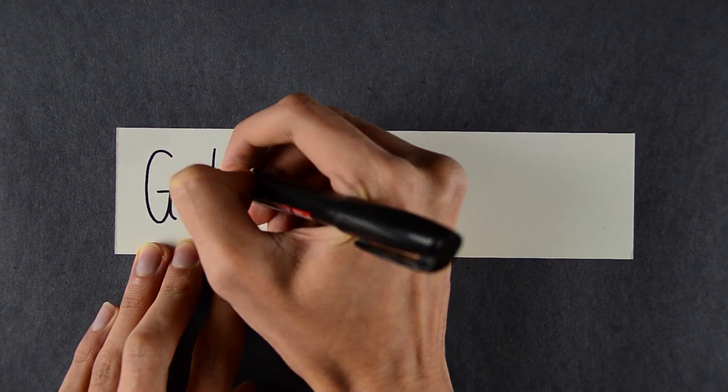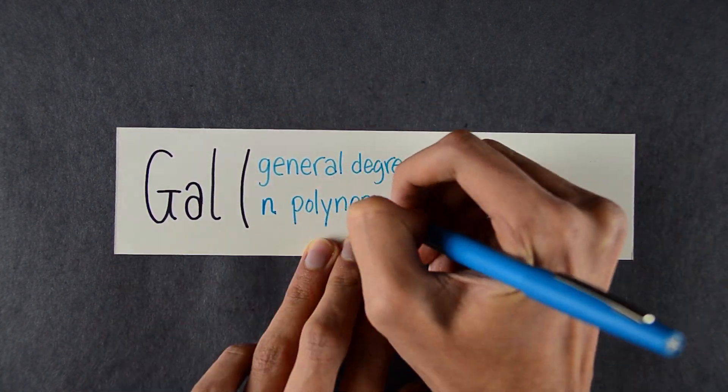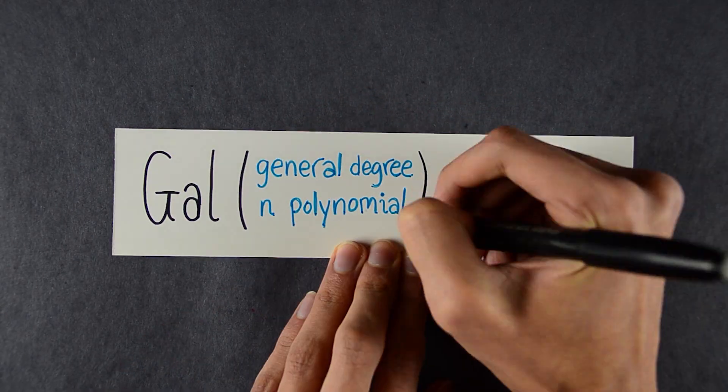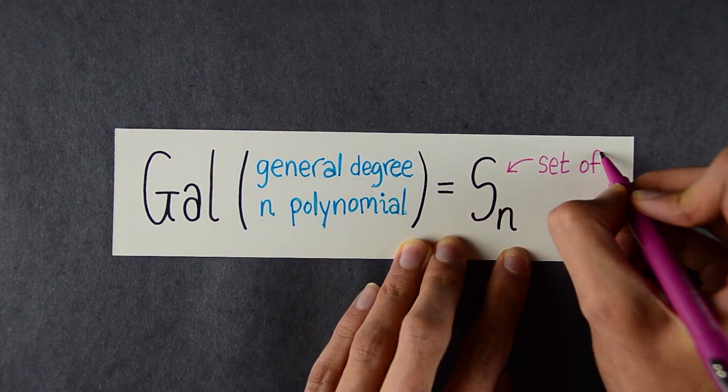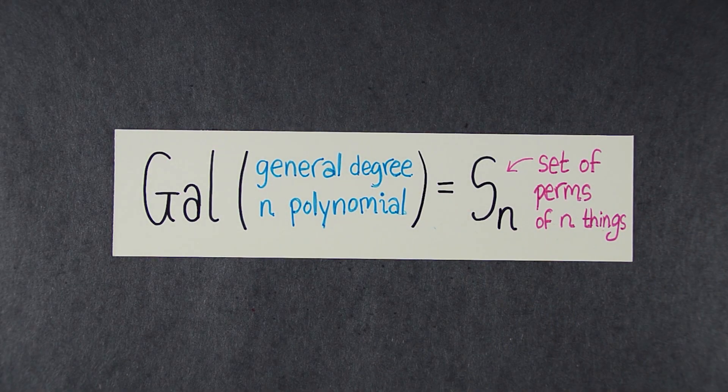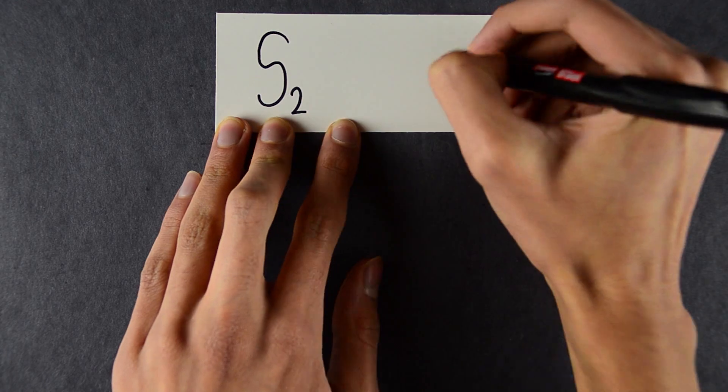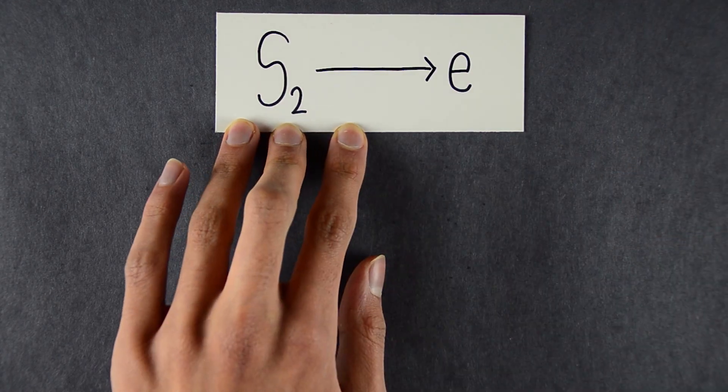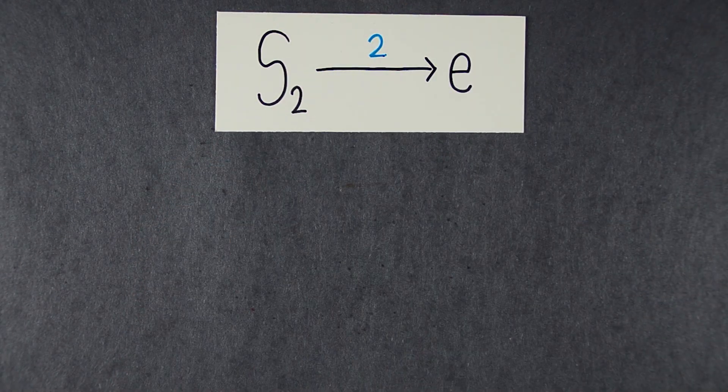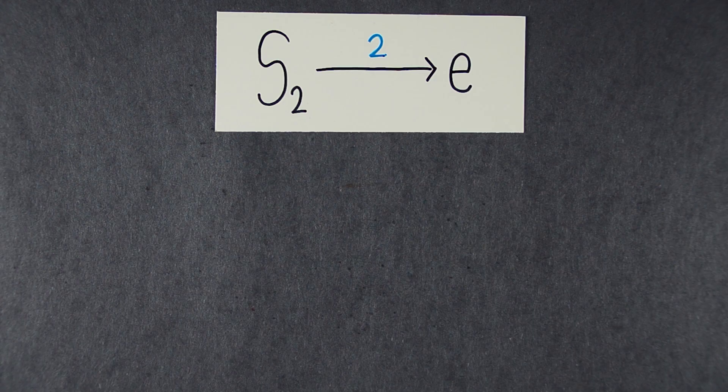Now we're ready to see why the quintic has no general formula. It's a fact that the Galois group of a general polynomial of degree n is Sn, the set of all permutations of n things. Let's see whether this group is solvable. For n equals 2, here's a chain of subgroups. The number in blue is the number of tiles that it makes. It's prime, so this group is solvable. And that's why there's a quadratic formula.